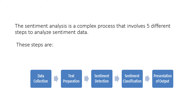Five steps are given for sentiment analysis: first, data collection; second, text preparation; third, sentiment detection; fourth, sentiment classification; and fifth, presentation of output. You collect the data, then prepare the text — for example, drawing three columns for positive, negative, and neutral. Then you find the sentiment, classify it, and present it as output. These are the five steps for analyzing sentiment data.